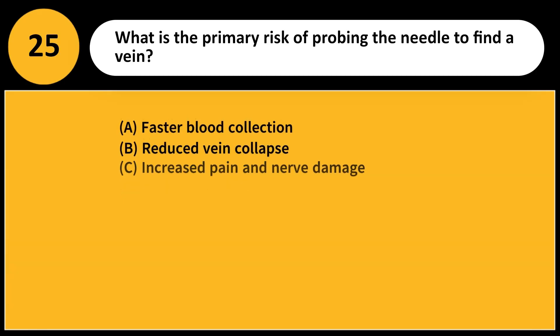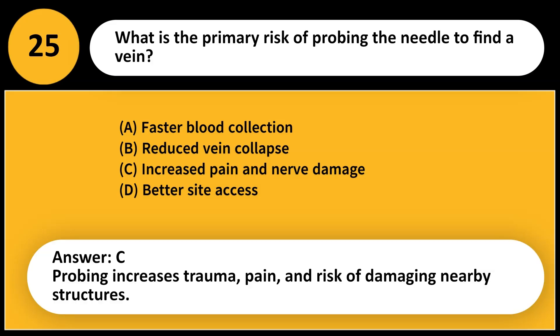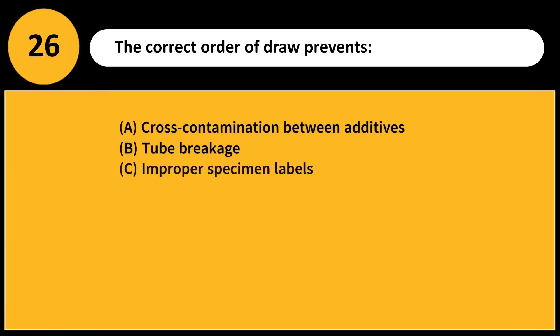What is the primary risk of probing the needle to find a vein? A. Faster blood collection. B. Reduced vein collapse. C. Increased pain and nerve damage. D. Better site access. Answer: C. Probing increases trauma, pain, and risk of damaging nearby structures.